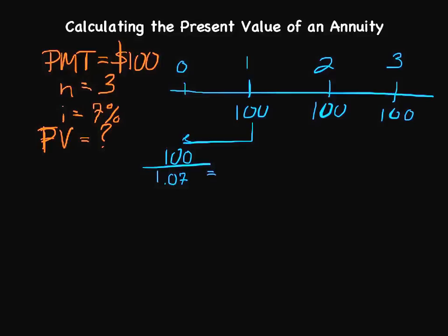We do the same thing with period two. We'll take this, carry it over, and take 100 divided by 1.07. But the difference here is we have to use this and take that to the nth power. For the first example, we're in the first period, so n would be 1. So 1.07 to the first power is 1.07, very simple to do.